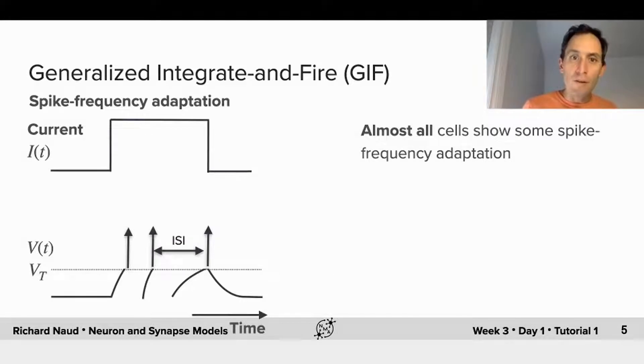More importantly, the generalized integrate-and-fire also captures spike frequency adaptation. So spike frequency adaptation is the process of neurons adapting to a certain stimulation, meaning that their inter-spike interval increases gradually with time when an input is not changing but remains constant and stimulating. This can be seen here. We have a sub-threshold current step and the inter-spike interval is increasing. This is seen in almost all cells. Almost all cells are showing some degree of spike frequency adaptation. The integrate-and-fire model is not able to reproduce this. It will always have exactly the same inter-spike interval for a given input current intensity.